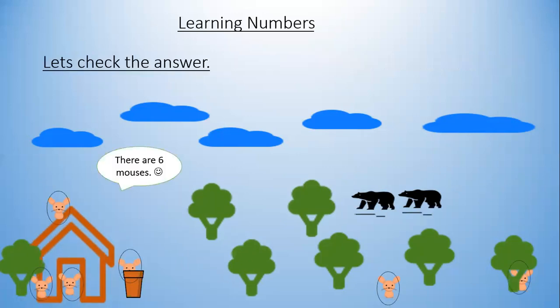Yes, we are right — there are six mice! One is on top, one is near the house and near the tree, one is in front of the gate, one is behind the pot, one is near the trees, and one is hiding behind the tree.